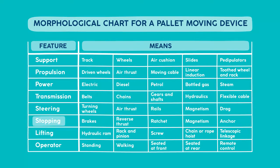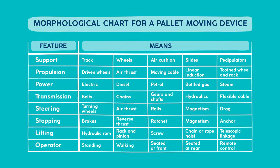For example, for stopping one might use brakes, reverse thrust, a ratchet, magnetism or even an anchor. The grid can be filled in by text or by sketches depicting the potential means of fulfilling the subsystem requirement.